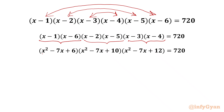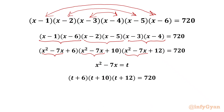Now we have x² − 7x appearing in all three factors, so it is better to substitute x² − 7x = t. Our equation becomes (t + 6)(t + 10)(t + 12) = 720.